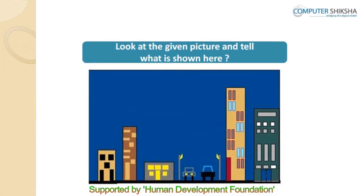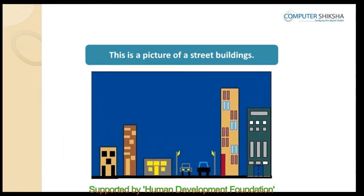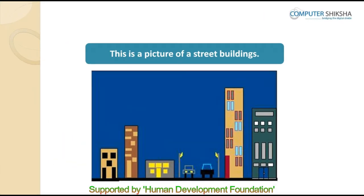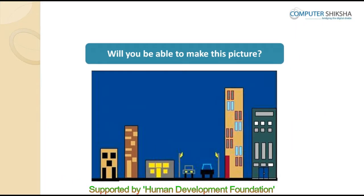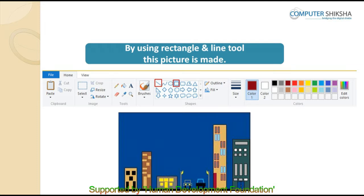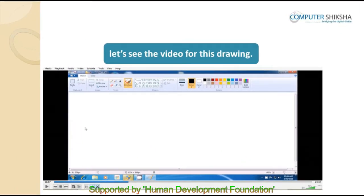Look at the picture in front of you and tell what this one is called. This is a picture of a street building. Will you be able to make this picture? By using the rectangle and line tool, this picture is made. If you can draw this picture, go ahead and draw it, else let us watch this video and with its help learn how we can make this picture.